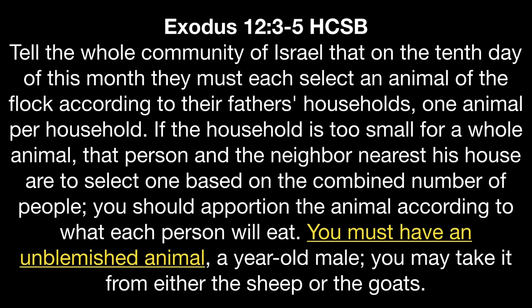Verse 5 also says the animal of the flock is to be without blemish, referring to the quality of the animal. All sacrifices given to Yahweh were to be from healthy, whole, clean animals. The animal could not be sick, could not have one of its members missing; it was to be robust, healthy, and worth something. You are never to bring a gift to Yahweh that does not mean something to you. It is much more difficult to let go of something that you have money tied up in and that you value.